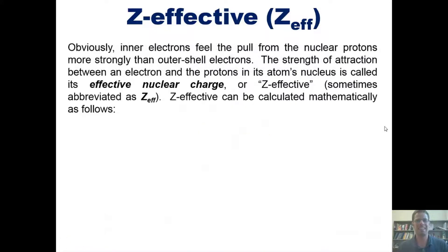For instance, the outermost electron here in this make-believe atom would feel attracted to the protons in this nucleus, but it would also feel repulsed by the other electrons in these innermost shells. So we can say then that these in-between electrons shield the outermost electron from the protons in the nucleus. This makes it so the outermost electron doesn't feel the protons and their attraction as strongly as it otherwise would. Obviously, inner electrons feel the pull from the nuclear protons more strongly than outer shell electrons.